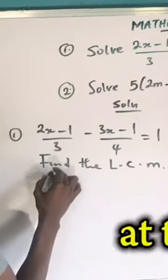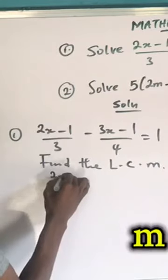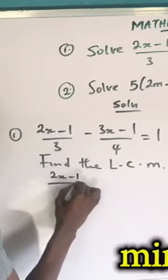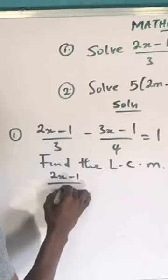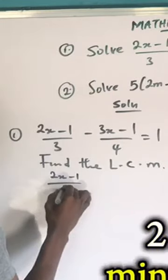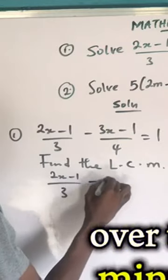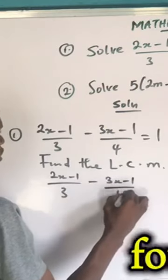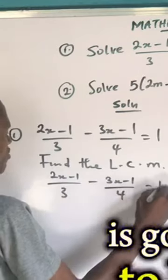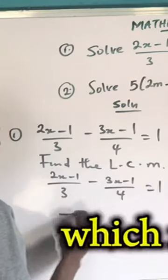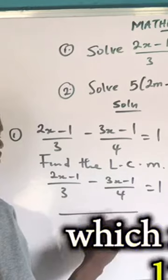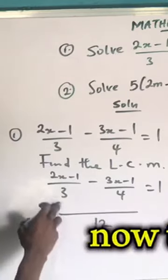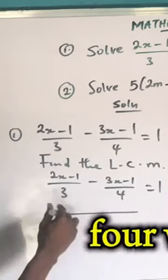Looking at the LCM of 2x minus 1 over 3 minus 3x minus 1 over 4 equals 1, the LCM is going to be 12. Now, 3 into 12 will give you 4. We're going to...